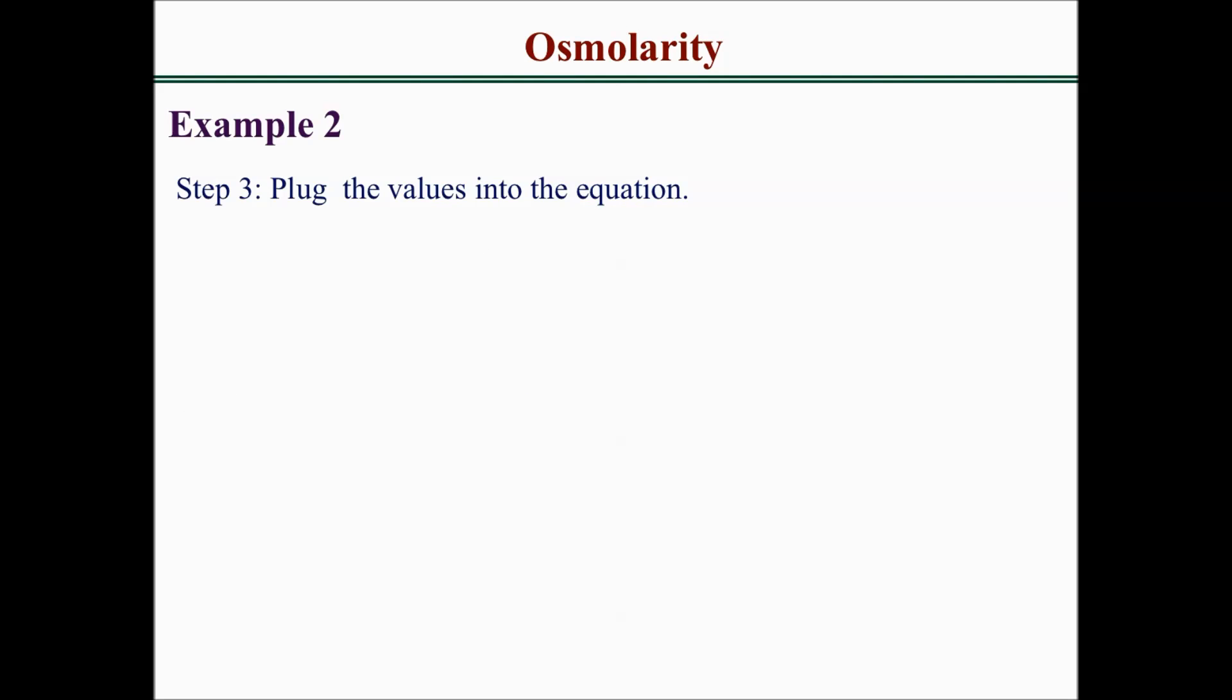Step 3 is to plug all our values into the equation. 0.02 g is the mass of the calcium ions, 40 is the molecular weight, times 1, which is the number of particles, times 1000. We should arrive at 5 milliosmoles per liter.